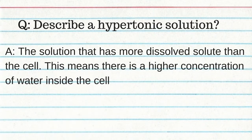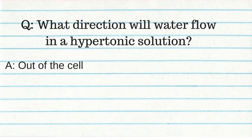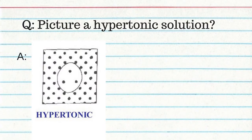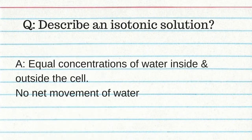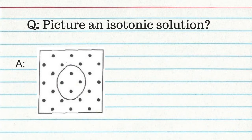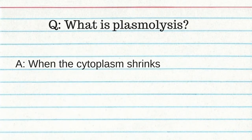A hypertonic solution has more dissolved solute than the cell, meaning there is a lower concentration of water outside the cell. Water flows out of the cell in a hypertonic solution. An isotonic solution has equal concentrations of water inside and outside the cell with no net movement of water. Plasmolysis is when the cytoplasm shrinks. Cytolysis is the bursting of the cell membrane.